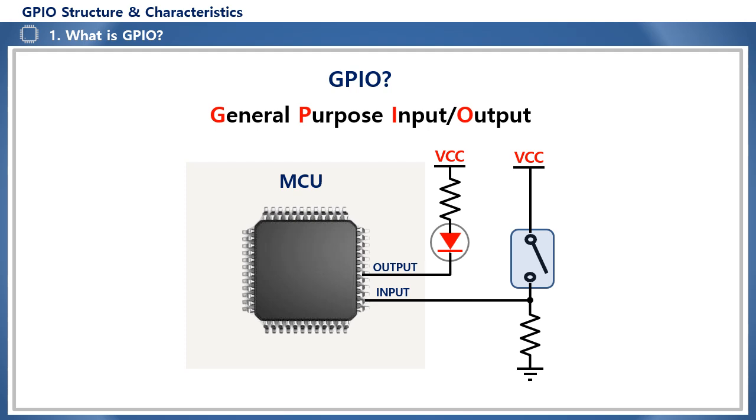In general MCU, it can be said that most of them are for GPIO pins, except for power and ground pins.